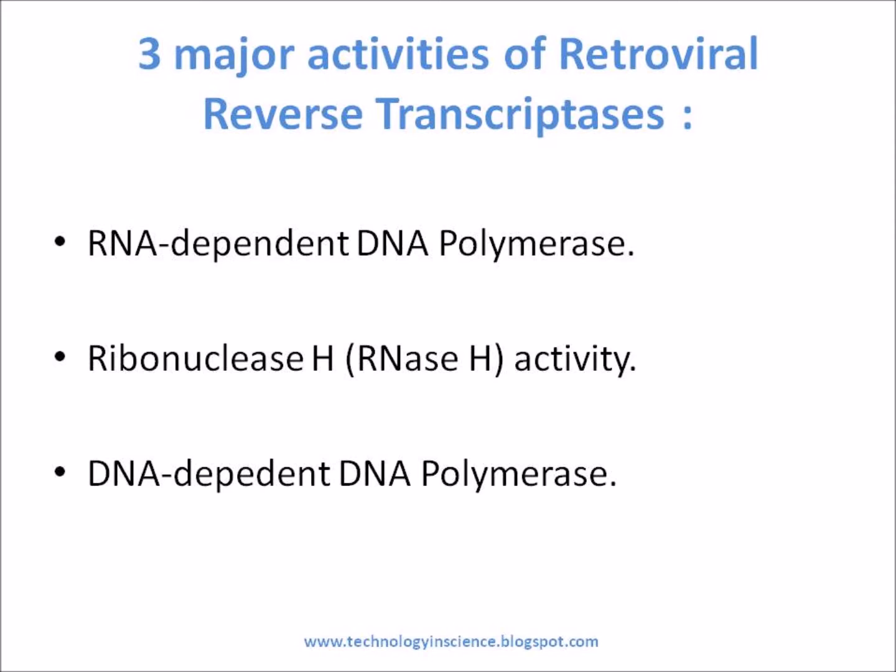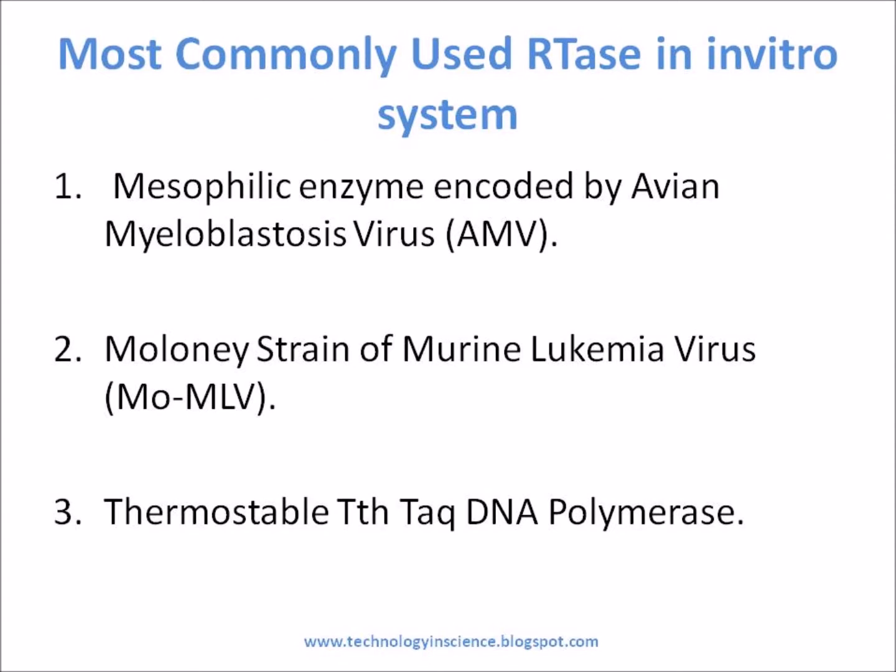Three forms of RNA-dependent DNA polymerases are mostly used in the in vitro synthesis of complementary DNA from an RNA template: the mesophilic enzyme encoded by avian myeloblastosis virus, the Moloney strain of murine leukemia virus, and the thermostable TTH DNA polymerase.